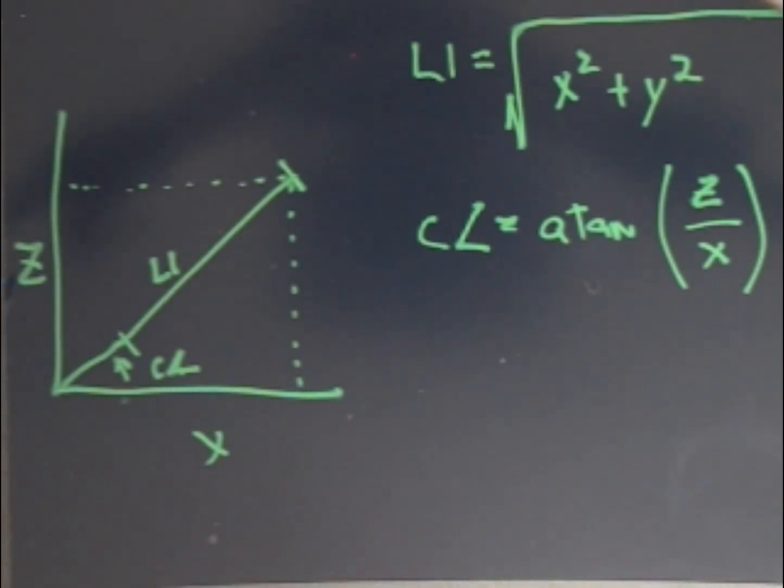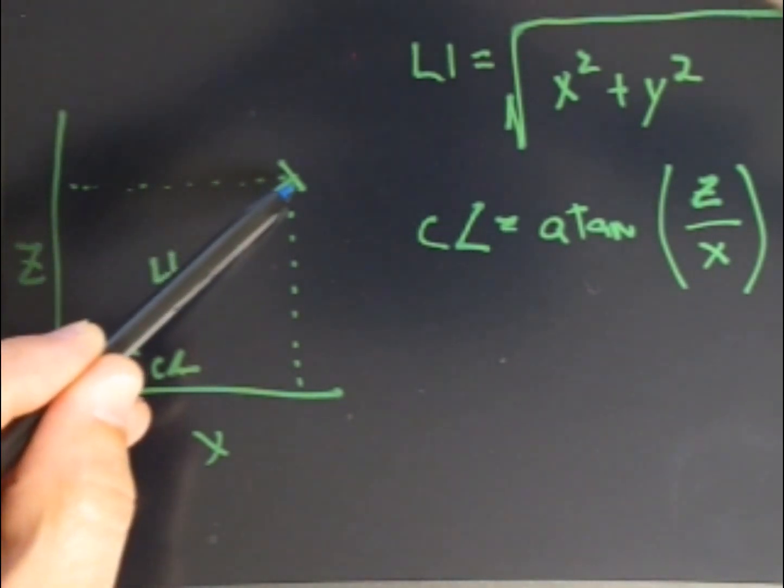In the inverse kinematics calculations for this hexapod, I'm going to look at it in two ways. The first way is an overhead view of the leg. If I look at this point being your X and Z point, this would be the coxa length going out to the femur and then all the way out to the leg tip.